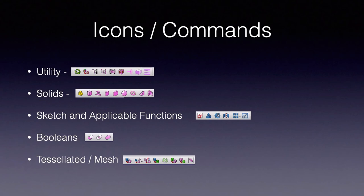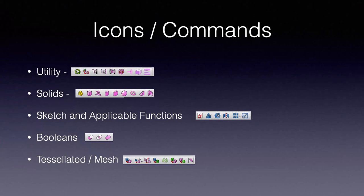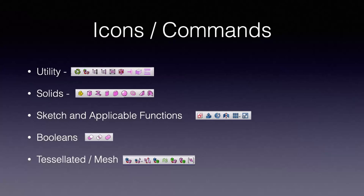There are also a set of icons for creating sketches and then using those to create GDML objects — things like extrusion, revolving, mirroring, and also arrays and scaling. There is a set of icons for Boolean operations: unions, intersections, or joining together. Finally, there is a set of icons related to tessellating things — either tessellating a FreeCAD object and creating a GDML tessellation, decimating such things to reduce the complexity of the tessellation, or taking a FreeCAD object and making a mesh, then using the mesh toolkit to convert that mesh back into a GDML tessellation.